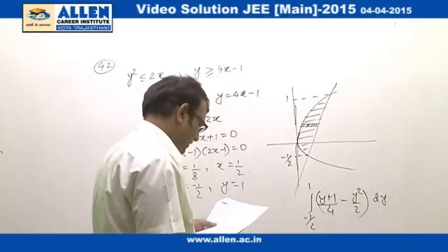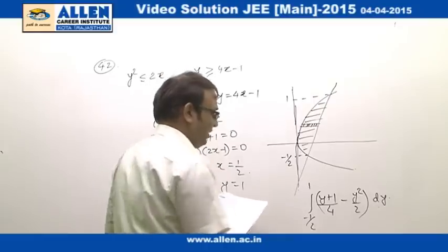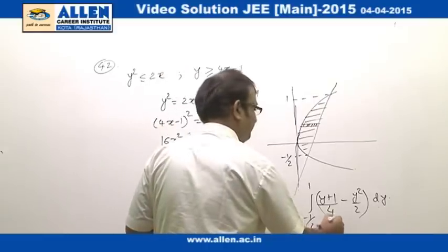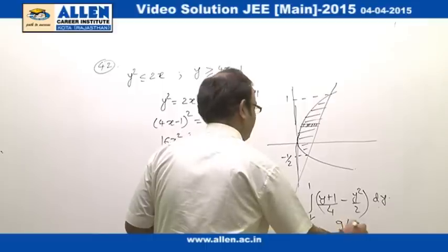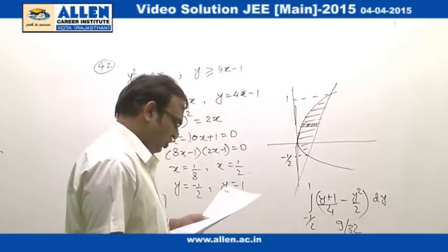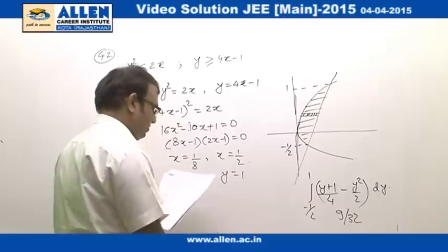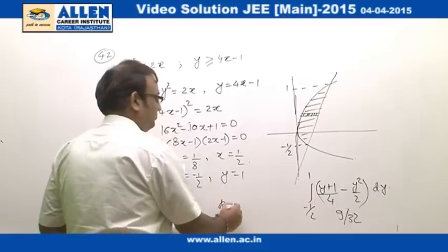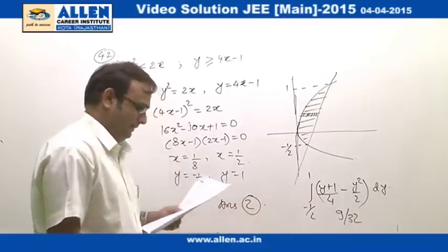Solving this integral, we get the required area as 9/32. Looking at the options, the correct option is option number 2.